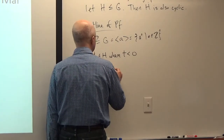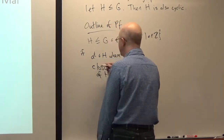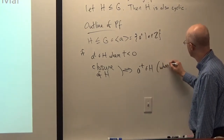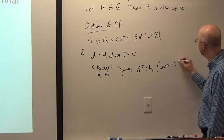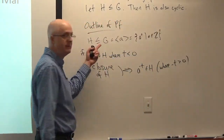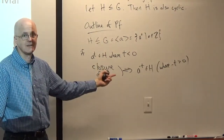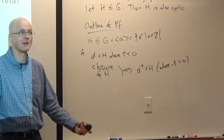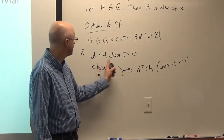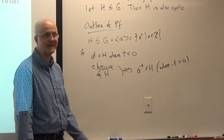Since H is a subgroup, closure implies the inverse of A^t, which is A^(−t), is also in H. If t is negative then −t is positive. Elements of H definitely have to be powers of A, because every element of G is a power of A and H is a subgroup of G. There cannot be only negative powers, because if a negative power is in H, its inverse is also in H by closure.